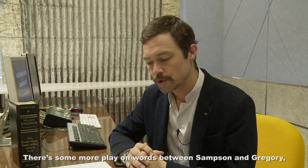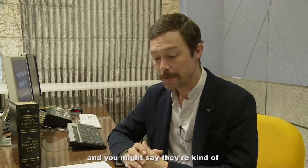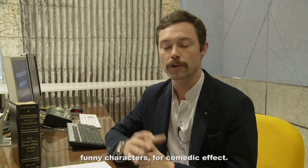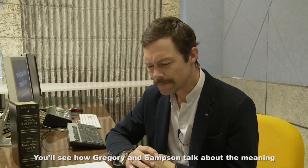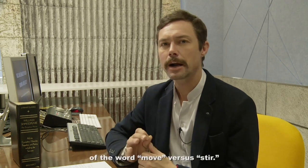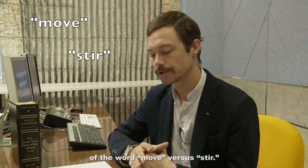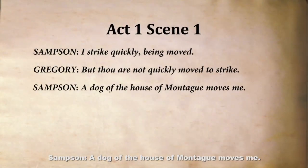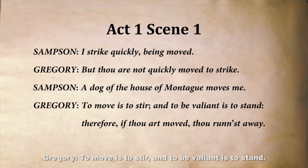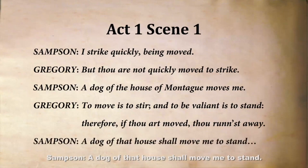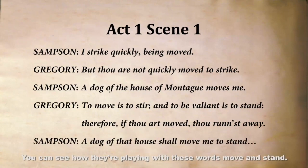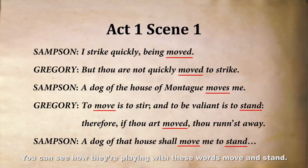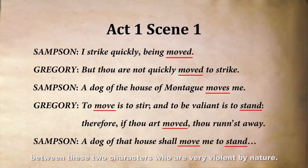There's more wordplay between Samson and Gregory — they're kind of funny characters for comedic effect. They talk about the meaning of 'move' versus 'stir.' Samson says: 'A dog of the house of Montague moves me. To move is to stir and to be valiant is to stand. Therefore if thou art moved, thou runnest away. A dog of that house shall move me to stand.' You can see how they're playing with these words, move and stand, and in staging this could be used for great humor between these two very violent characters.